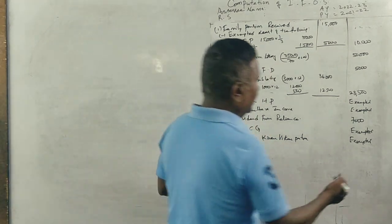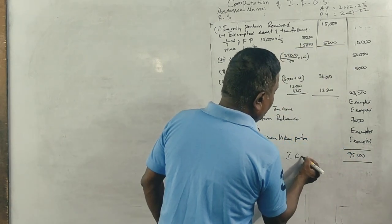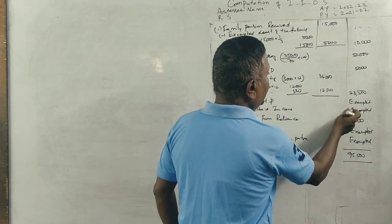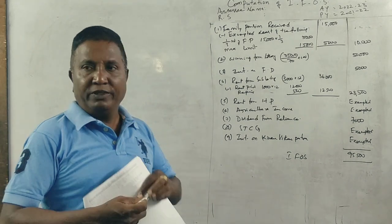That's all. 95,500. See, most of the things are exempted. 1, 2, 3, 4. Four points are exempted. The remaining 5 points are taxable. Okay.